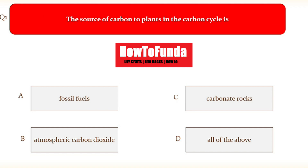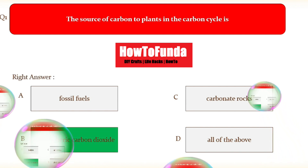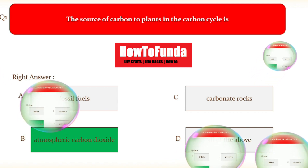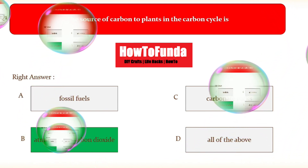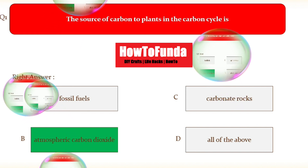The first question is: the source of carbon to plants in the carbon cycle is — option A fossil fuels, option B atmospheric carbon dioxide, option C carbonate rocks, option D all of the above. The correct answer is atmospheric carbon dioxide, which is the source of carbon to plants in the carbon cycle.